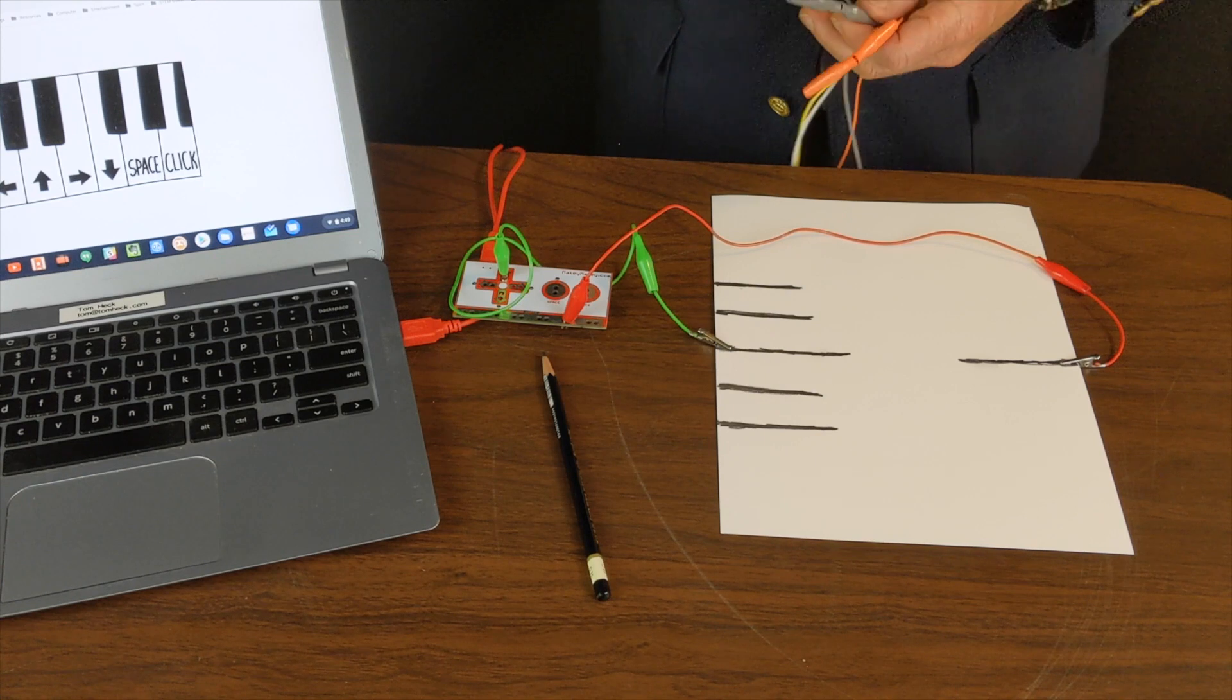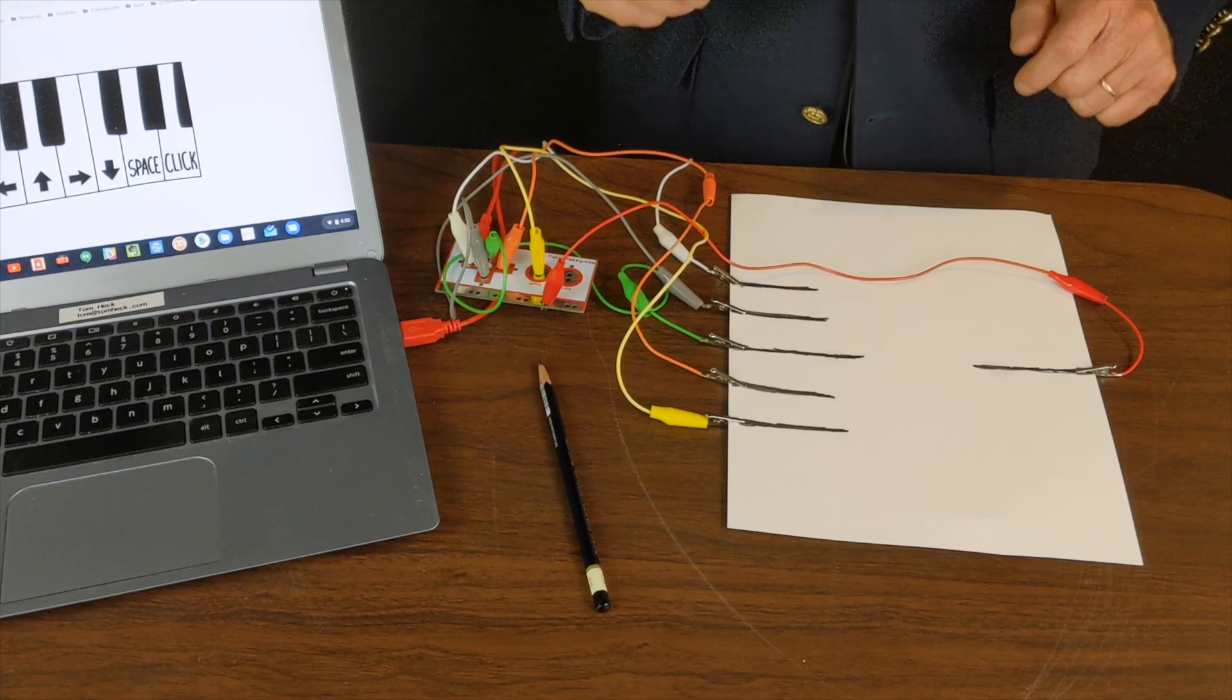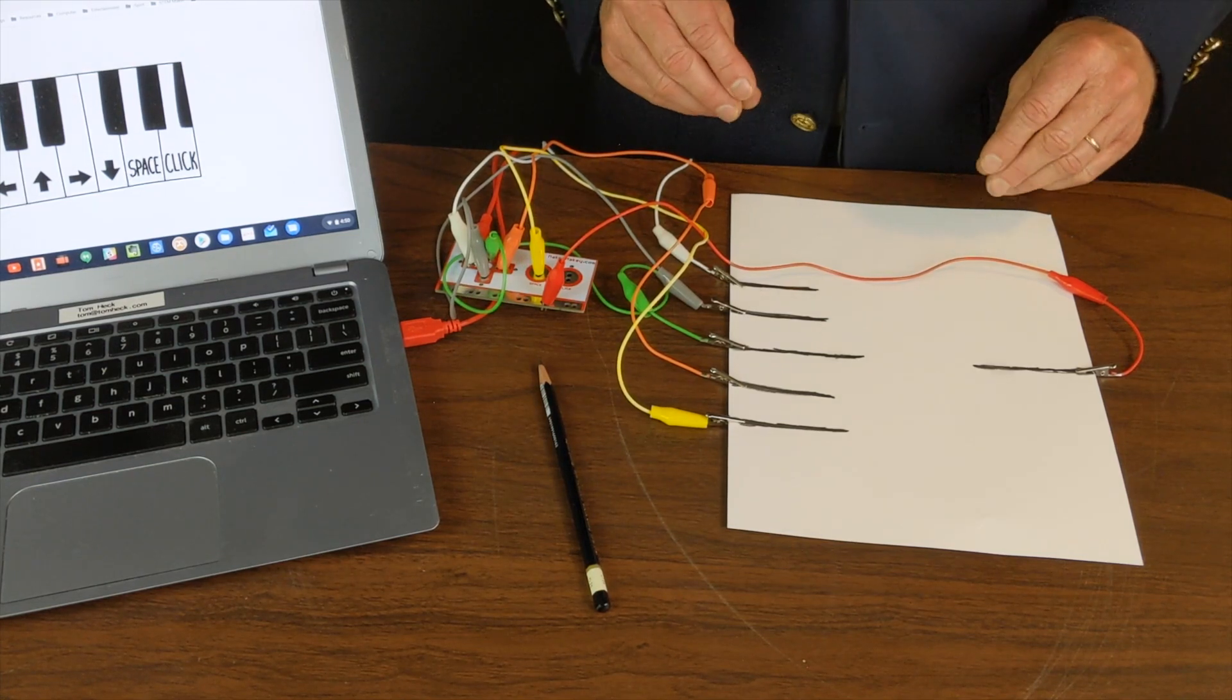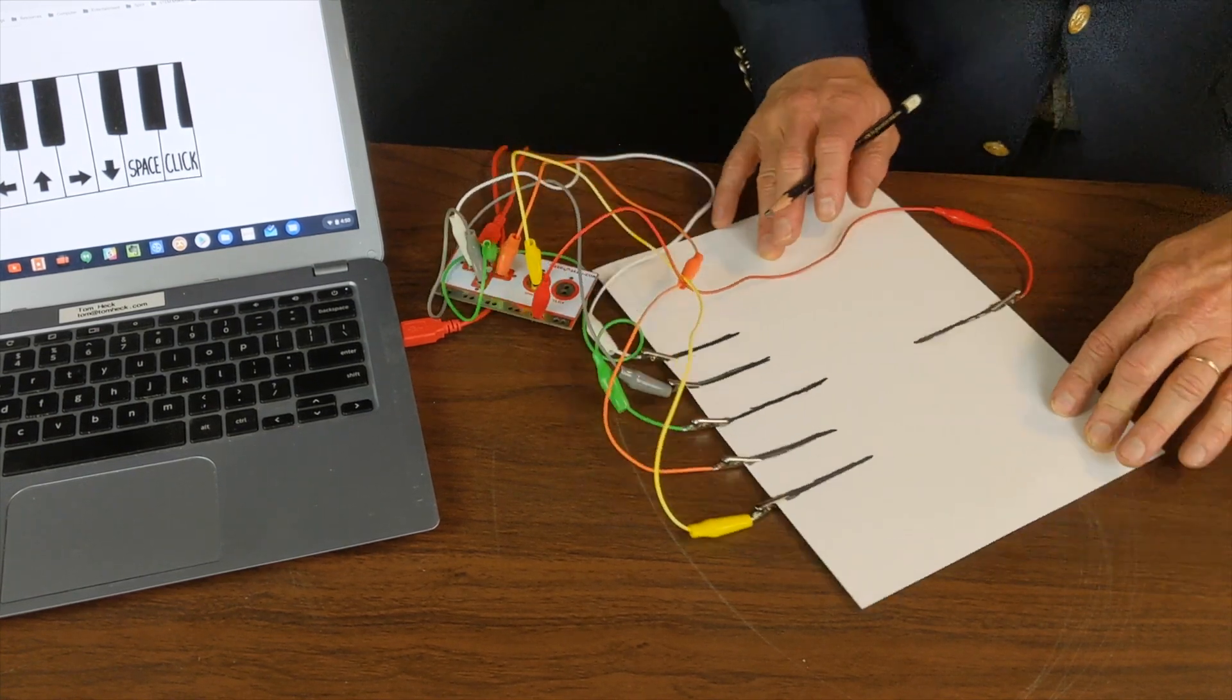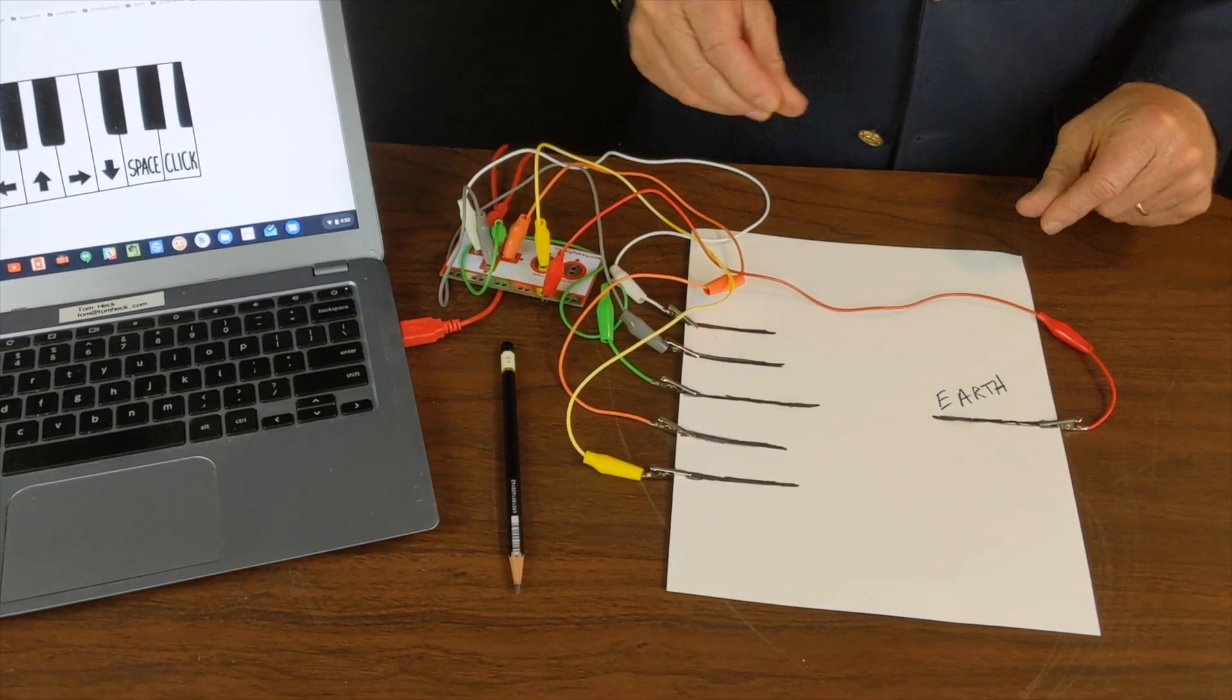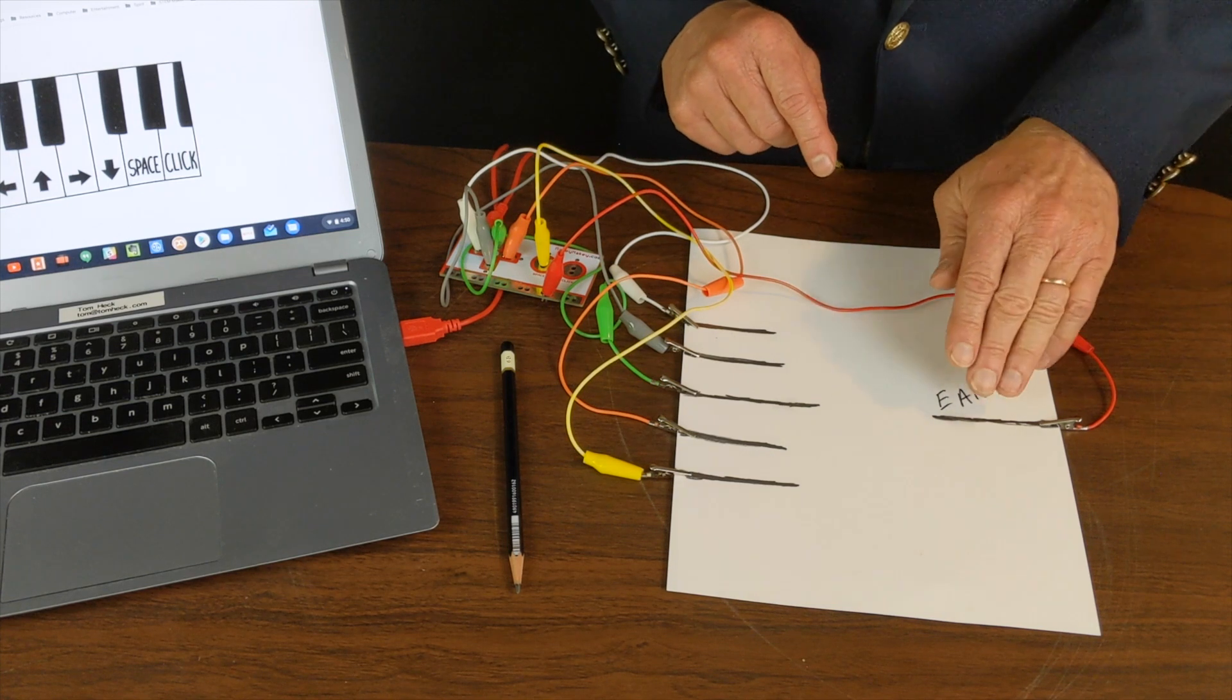Now it's time to attach my alligator clips. Here we are with our five-key piano. This is my earth right here. I always have to touch the earth so I'm completing the circuit. So here we go.